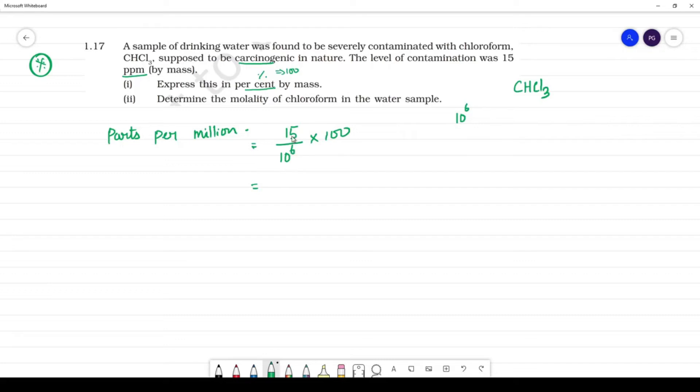10 power of 6 is 15, 100 is equal to 100. So 15 into 10 to the power of 6 into 100 divided. 15 into 10 to the power of minus 4. Percentage. OK.